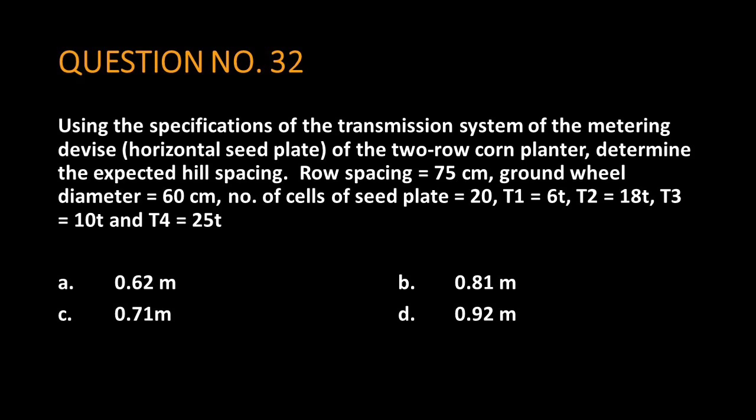Row spacing is 75 cm, ground wheel diameter is 60 cm, number of cells of seed plate is 20, T1 is 6 T, T2 is 18 T, T3 is 10 T and T4 is 25 T. The answer is